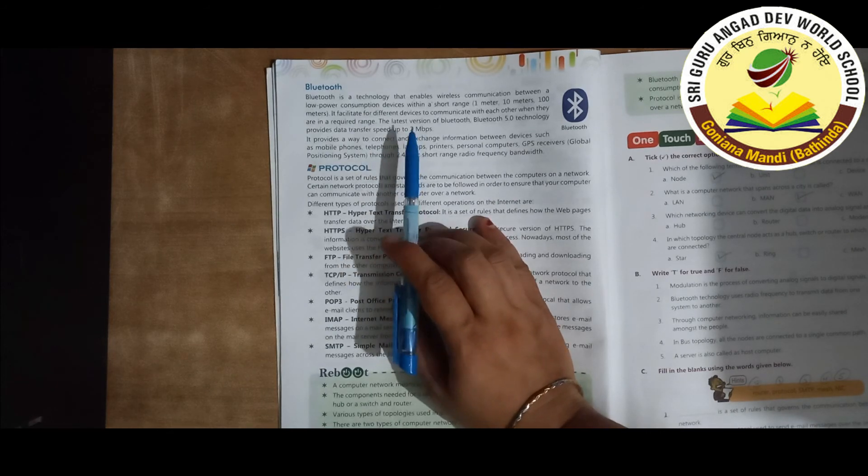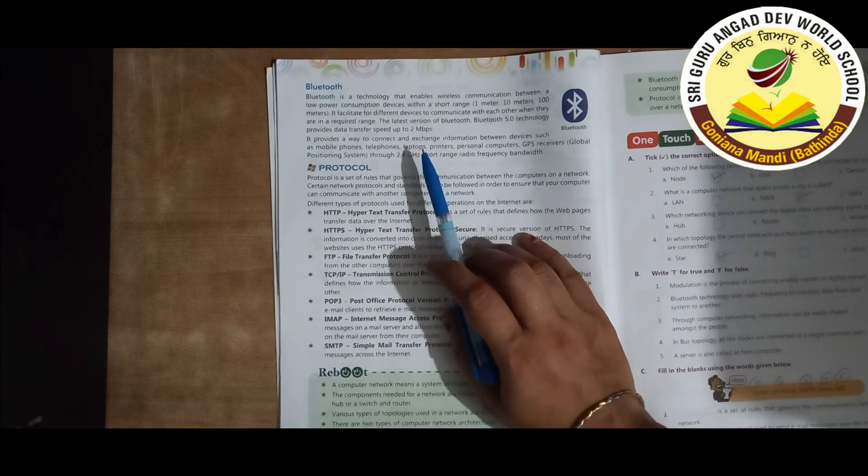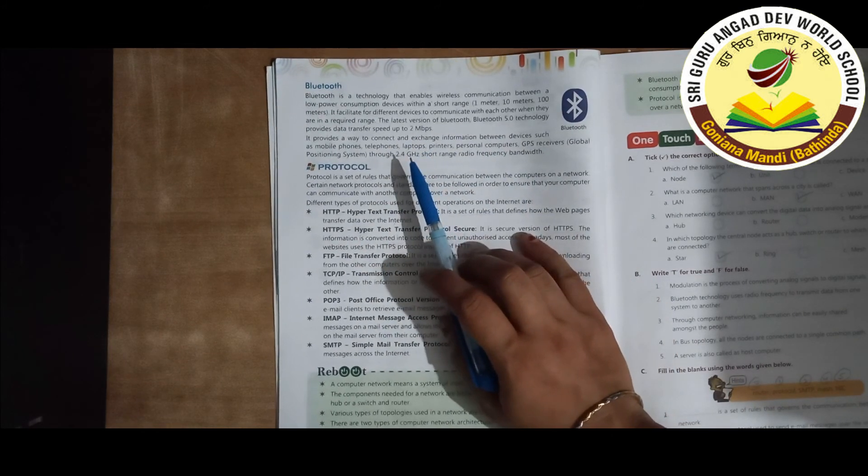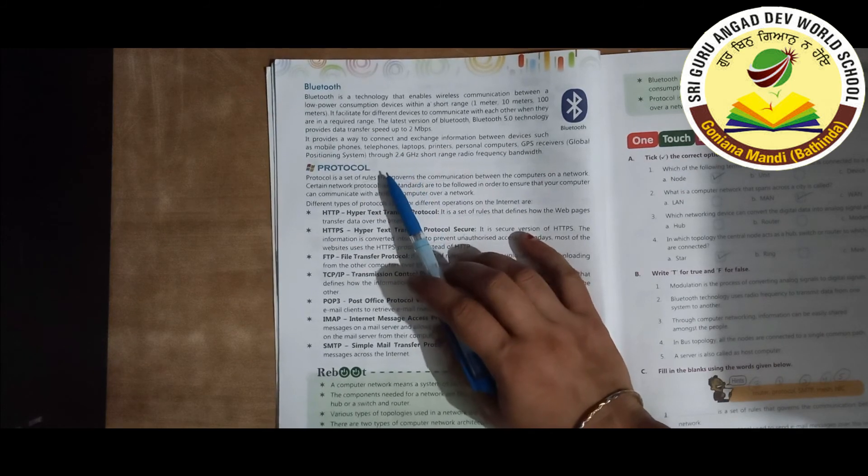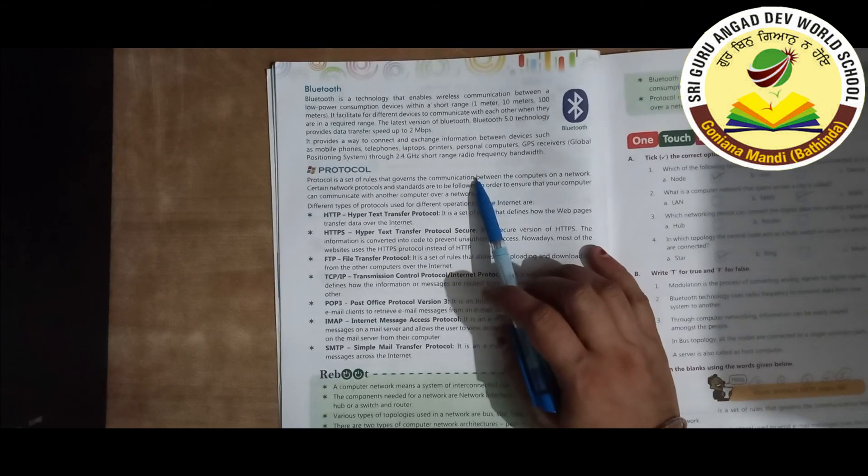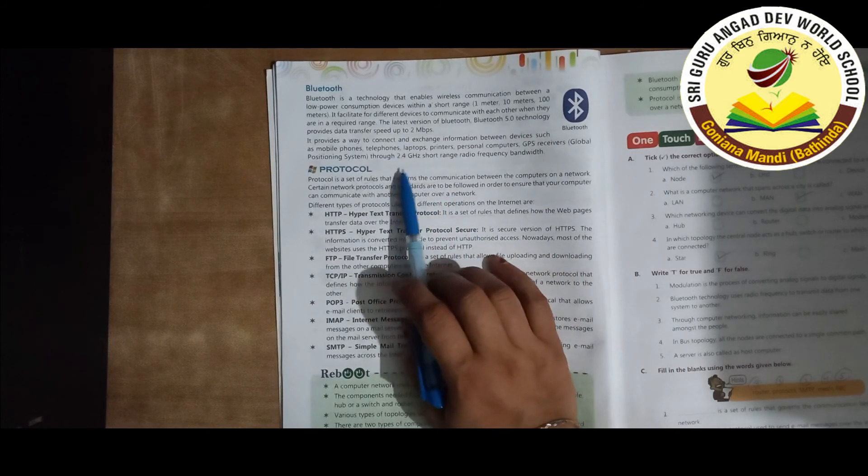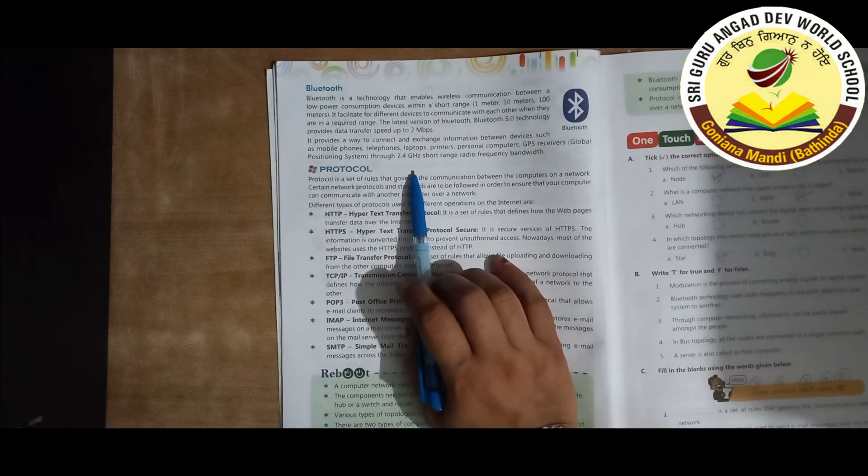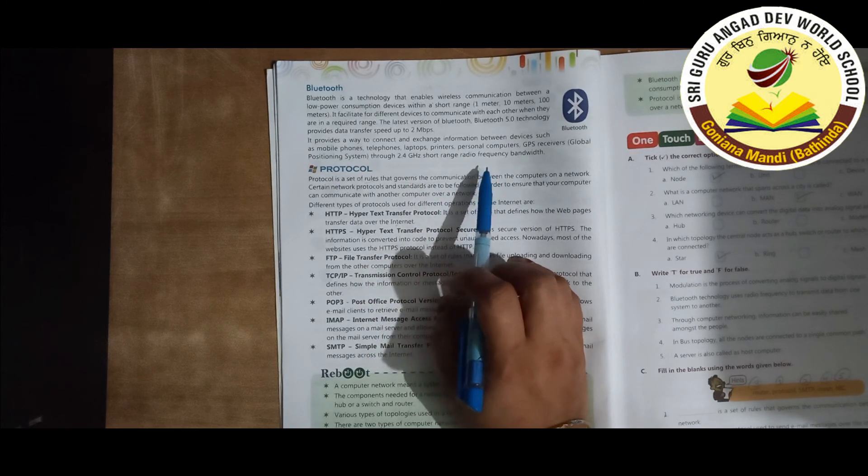The latest version of Bluetooth, Bluetooth 5.0 technology, provides data transfer speed up to 2 Mbps. It provides a way to connect and exchange information between devices: mobile phones, telephones, laptops, printers, personal computers, GPS receivers, through 2.5 GHz short-range radio frequency bandwidth.